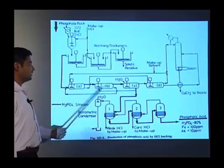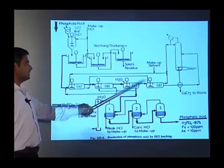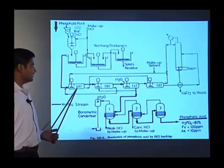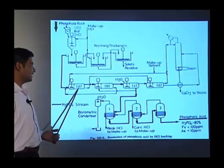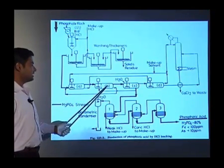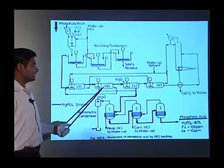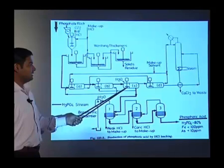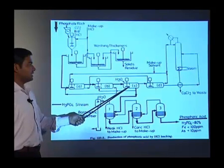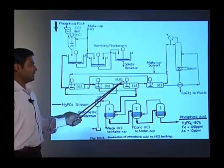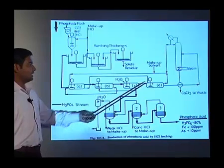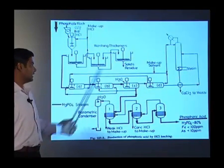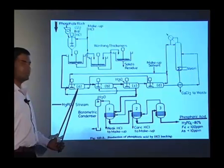Here we can see the mixer settlers A, B, C, and D. In A, the CaCl2 and CaF2 will be taken in mixer settler A, whereas B will remove the traces of Ca²⁺ ions. Then in C, we are adding water, where the H3PO4 will be extracted in the water, and the water, HCl and solvent that are again returned back to mixer settler A.